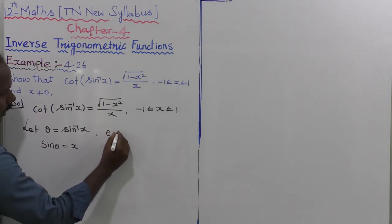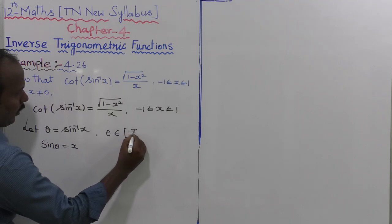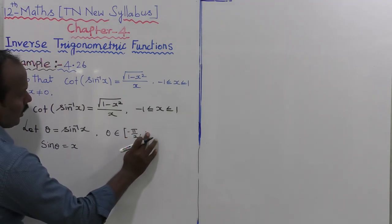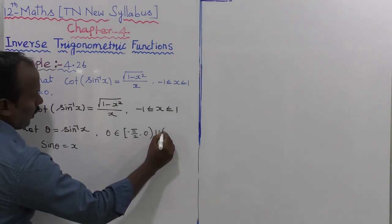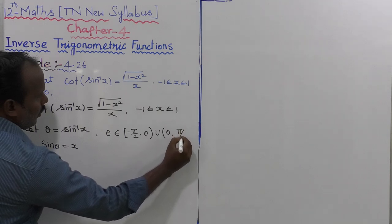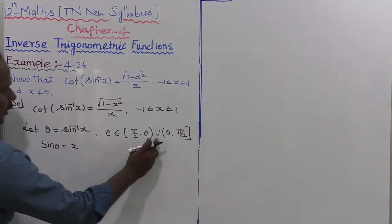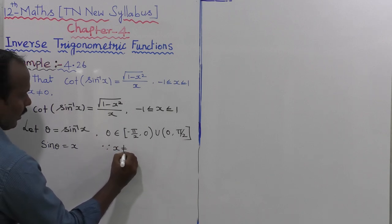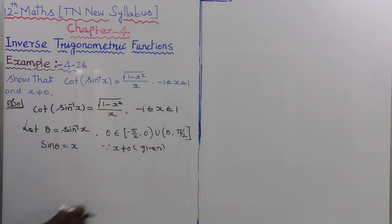So, theta belongs to the closed interval minus pi by 2 to pi by 2, with 0 as an open interval excluded. This is because since x is not equal to 0 — that is given — the value 0 is compulsorily excluded from the interval minus pi by 2 to plus pi by 2.